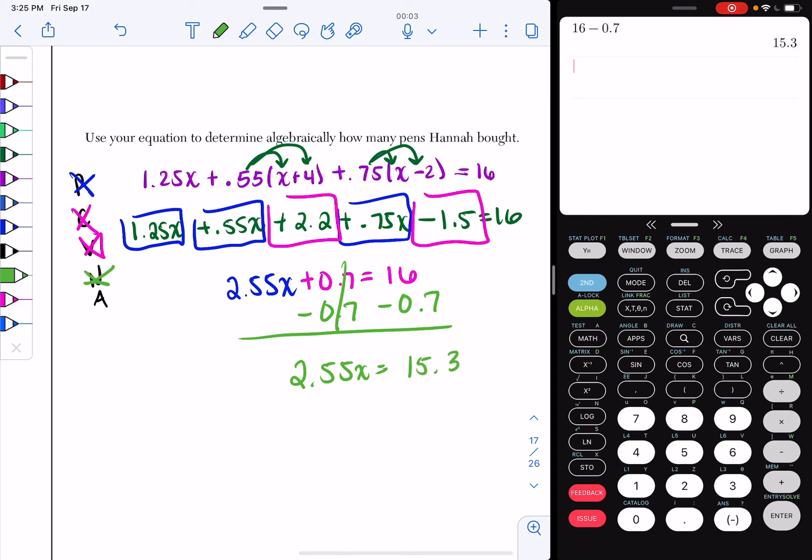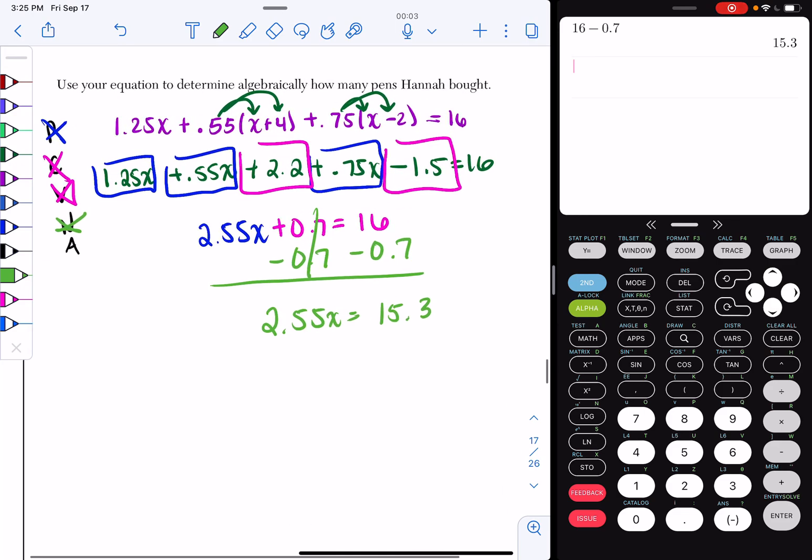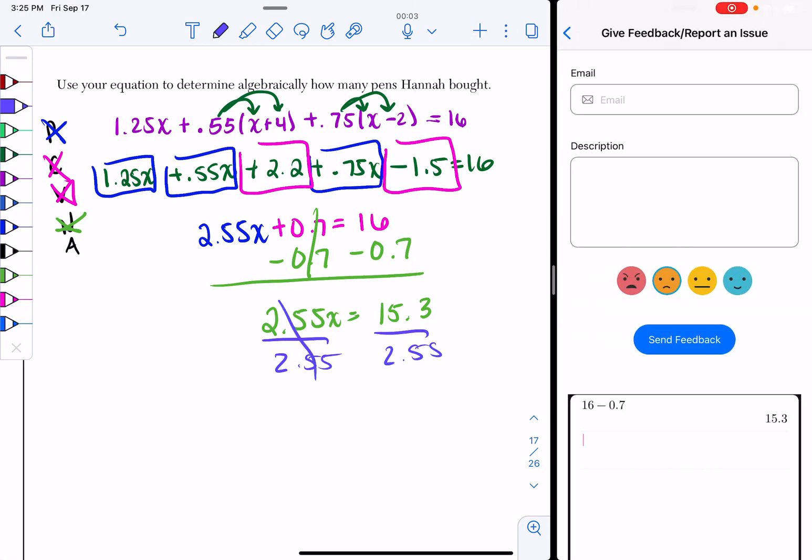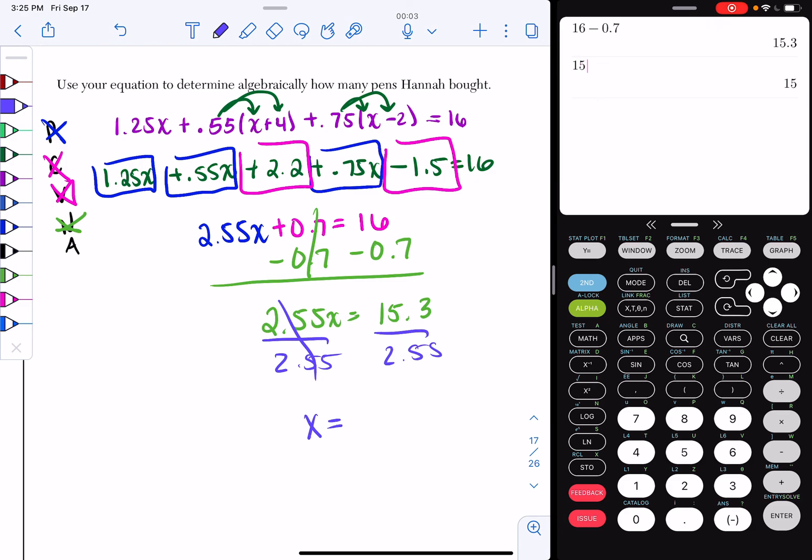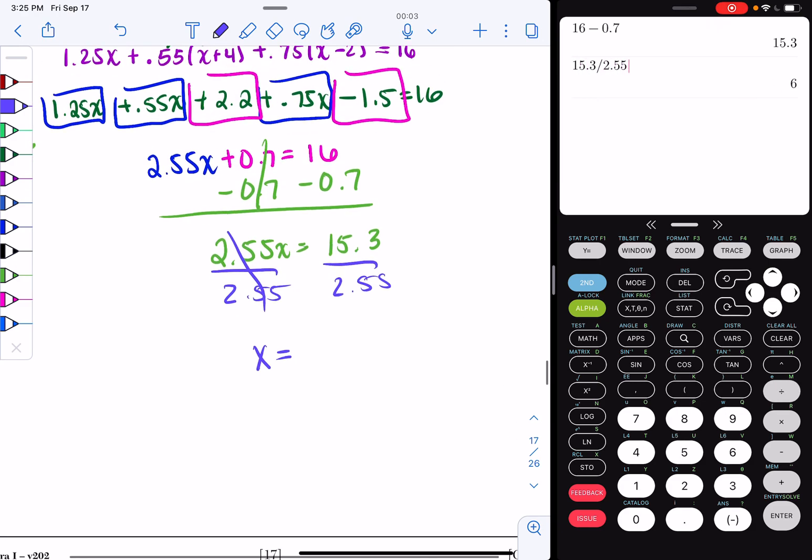Now, last but not least, you get your final answer by getting rid of the number that's attached to your X. So I'm going to divide both sides of my equation by 2.55. So I divide by 2.55, I get X equals 15.3 divided by 2.55, and I get X equals 6.